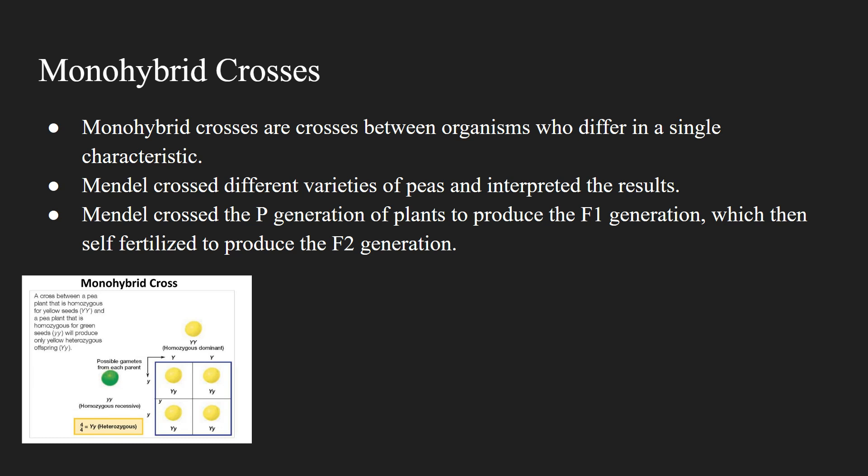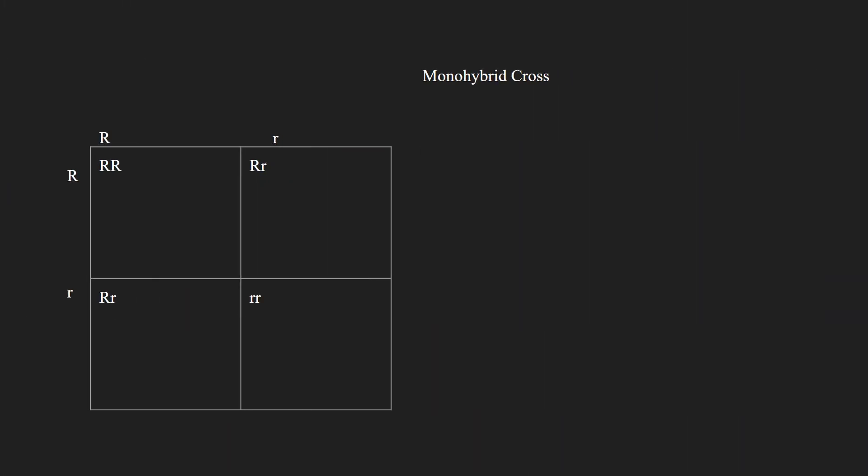So to form a monohybrid cross, you put all the possible gametes on the side of the Punnett square, which is simply a grid, and then you combine the gametes to result in the genotype. For example, in this monohybrid cross, you can see that the organism is heterozygous for seed shape. And when you cross the gametes, it can result in three different genotypes.